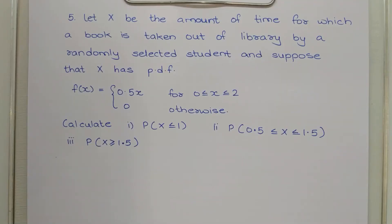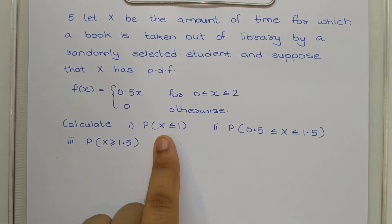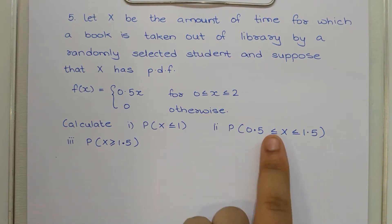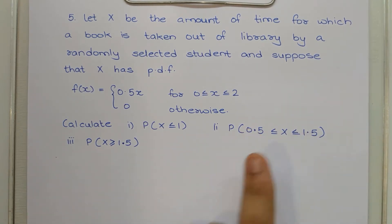In question 5, x is the amount of time for which a book is taken out of a library by a randomly selected student, and x has PDF f(x) = 0.5x for x between 0 and 2. We have to find P(X ≤ 1), P(0.5 ≤ X ≤ 1.5), and P(X > 1.5).